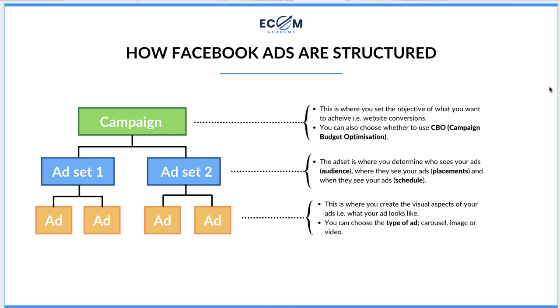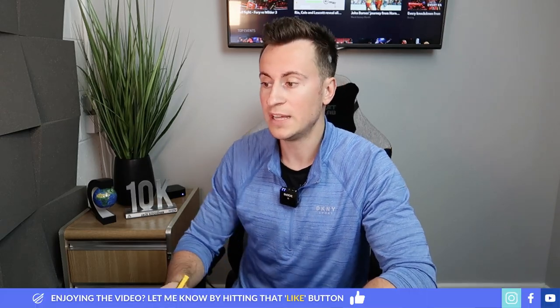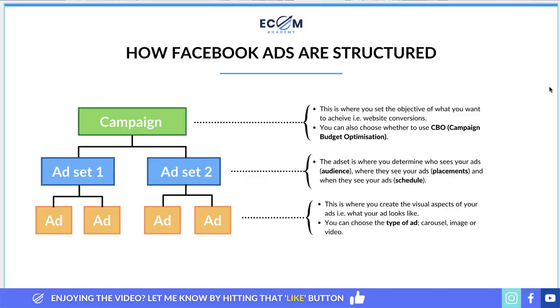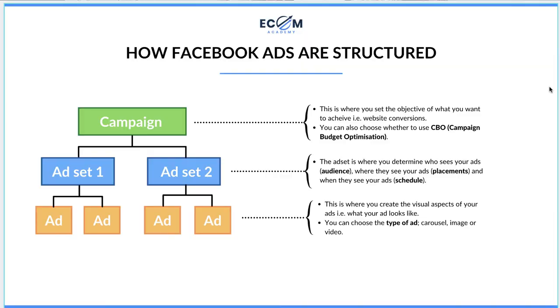Within your campaigns you have what are called ad sets. Ad sets is where you determine three different things: the audience — your interests, demographics and locations; the placements — whether to show it on desktop, mobile, the news feed, Facebook Marketplace, and so forth; and also a schedule, so when you know the most profitable hours of the day you can switch budgets to lifetime and select specific hours of specific days to show your ads.